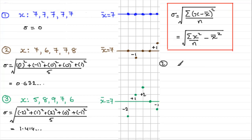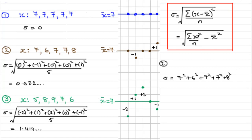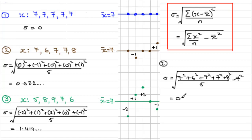Let's apply the new formula to dataset two. Sigma equals the square root of: seven squared plus six squared plus seven squared plus seven squared plus eight squared, all divided by five, minus seven squared. Working this out on your calculator gives 0.632 — the same result as before. Try applying this formula to dataset three yourself and check you get 1.414.